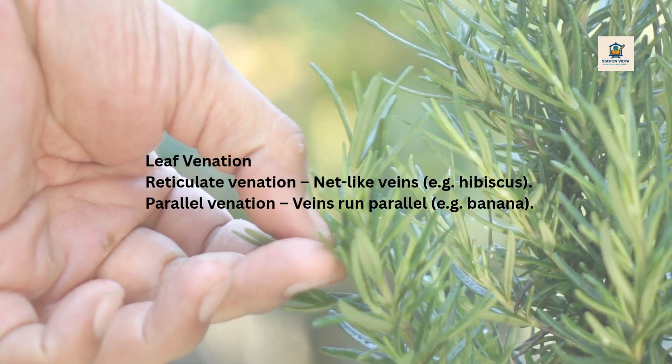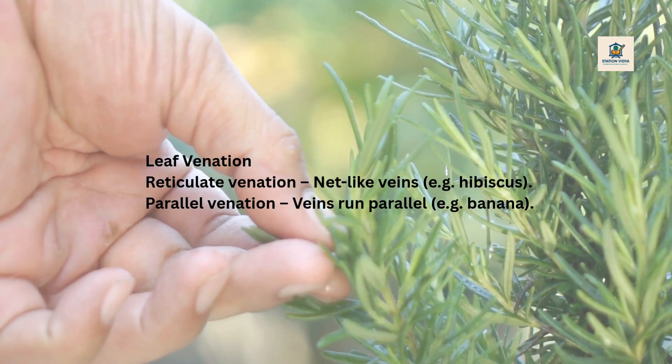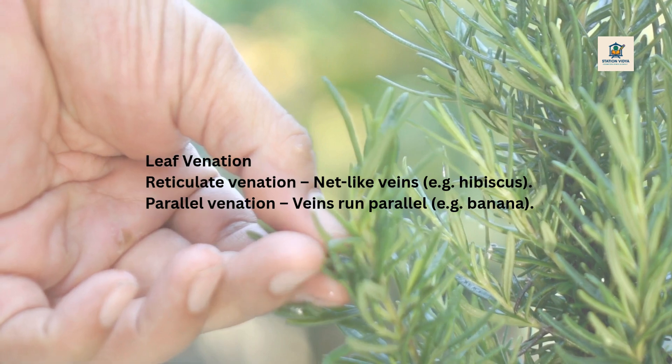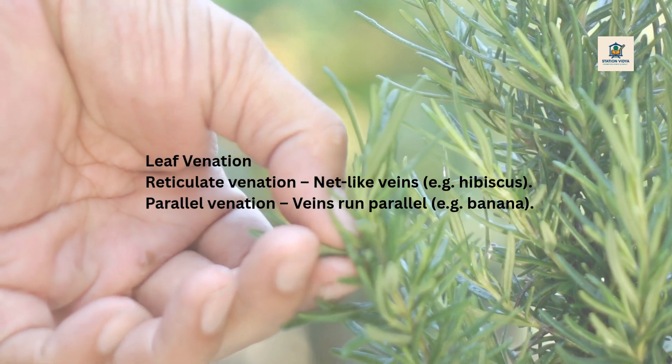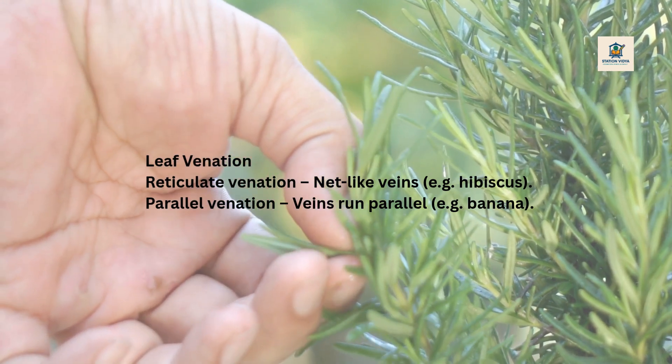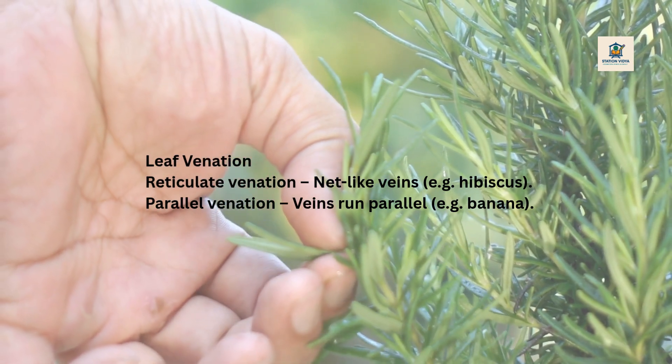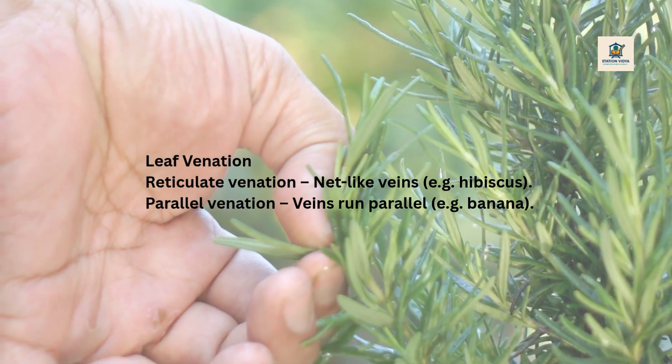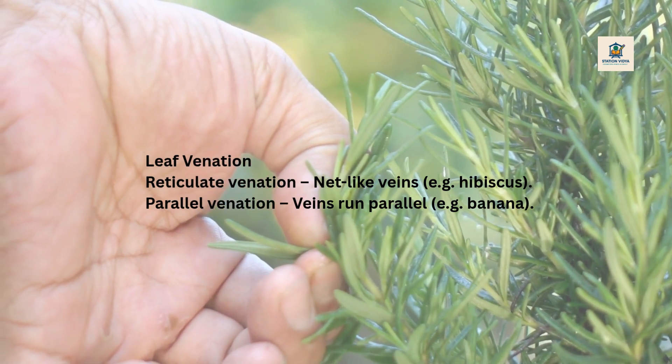Leaf venation. Reticulate venation: net-like veins, e.g. hibiscus. Parallel venation: veins run parallel, e.g. banana.